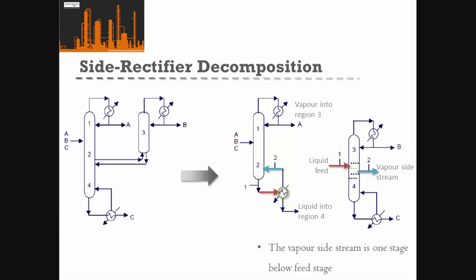We can also do the same for the side rectifier. But in this case, because we've added section 4 over the bottom of our first column, how we represent that is by adding our partial re-boiler back onto the bottom of our first column.